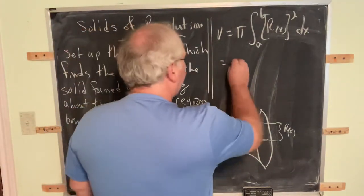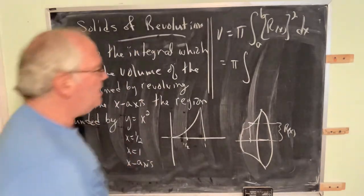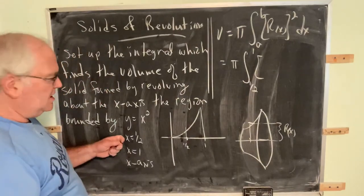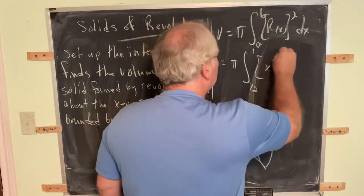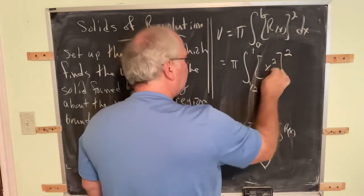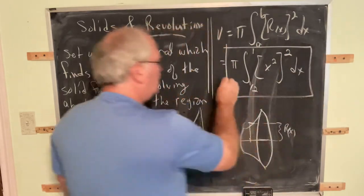So a goes from one-half to one. I need the radius, which in this case is simply the function value. The function value is x squared. Radius squared, squared, and you're done.